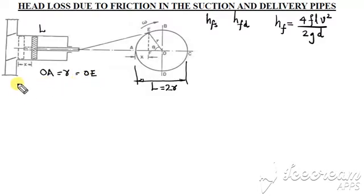Crank angle is theta, crank radius is R, stroke length is L which is equal to 2R. The angular velocity of the crank is omega. The rotational speed in RPM is N.